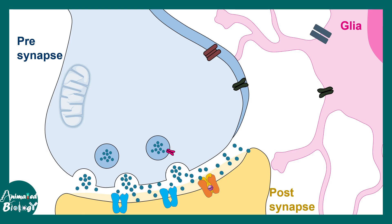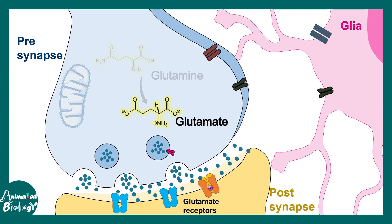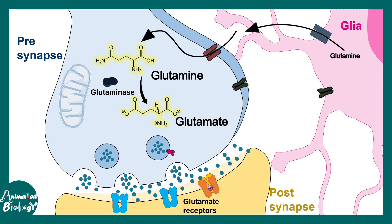An important part is how glutamate is synthesized in the synapse and packaged. Glutamate in the presynapse is synthesized from glutamine with the help of the enzyme glutaminase. Once synthesized, it gets packaged into vesicles. Glutamine comes from the glia — the astrocytes. There are specific transporters in the presynapse that uptake glutamine, which is then utilized to generate glutamate.